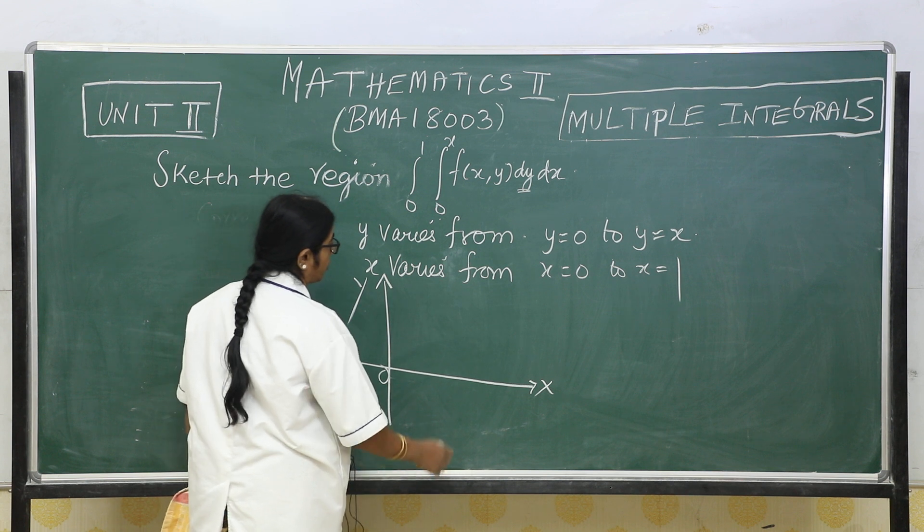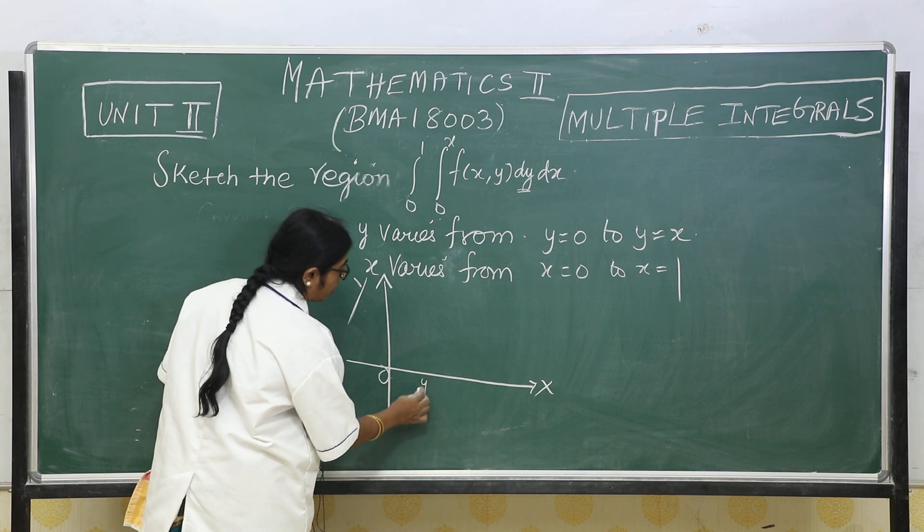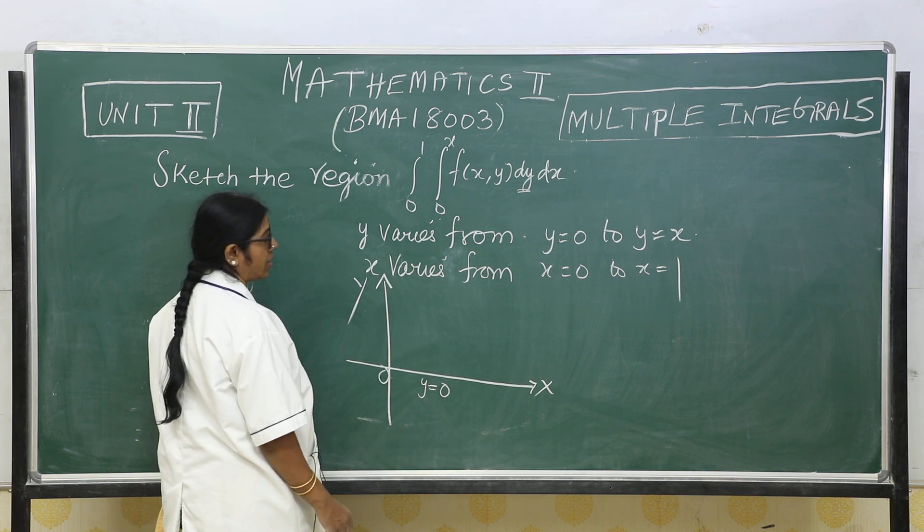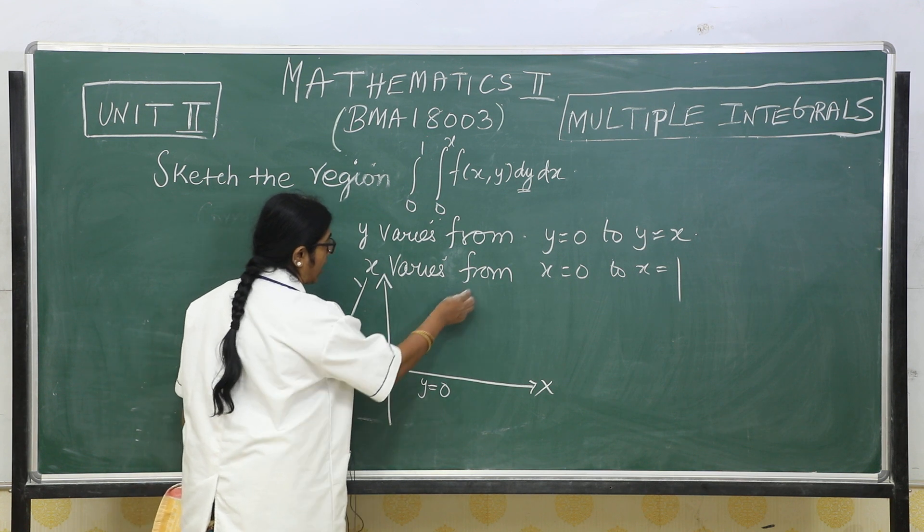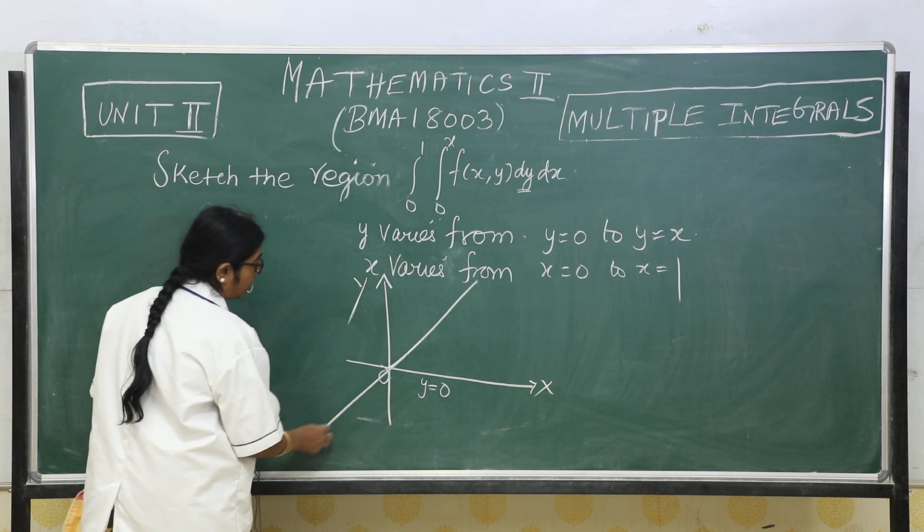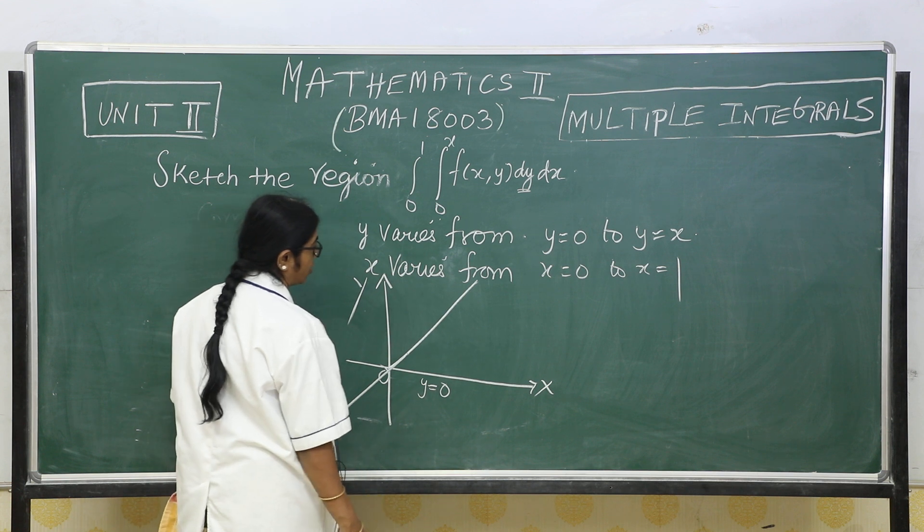y equal to 0 is the x axis and y equal to x is the line which is passing through the origin. It is a straight line, y equal to x.